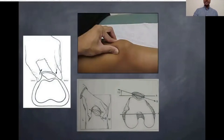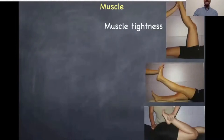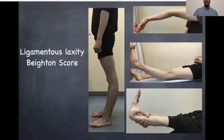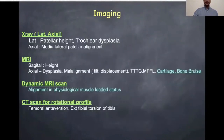Patella tilt needs to be assessed. The most important thing not to forget is whether there is any tightness of the quadriceps, hamstring, or calf muscles, as well as muscle weakness. Before you finish the clinical examination, make sure the Beighton score is not more than five, because that indicates generalized ligamentous laxity that could be contributing to instability.